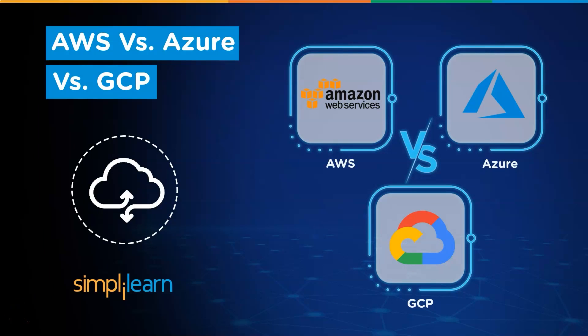In cloud computing, the competition for leadership is a tough three-way race. Amazon Web Services, Microsoft Azure, and Google Cloud Platform clearly are the top cloud companies, holding a commanding lead in the infrastructure as a service and platform as a service markets.